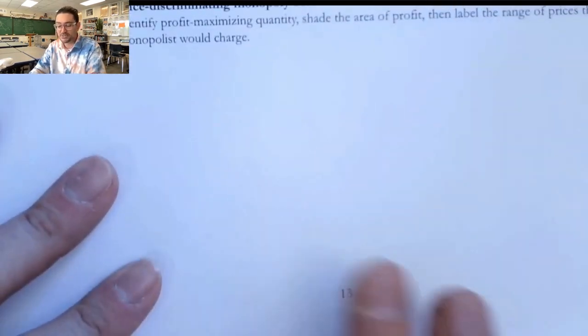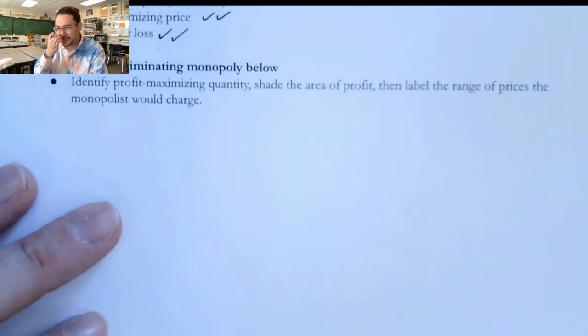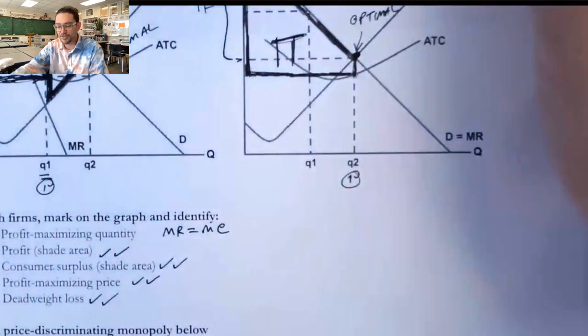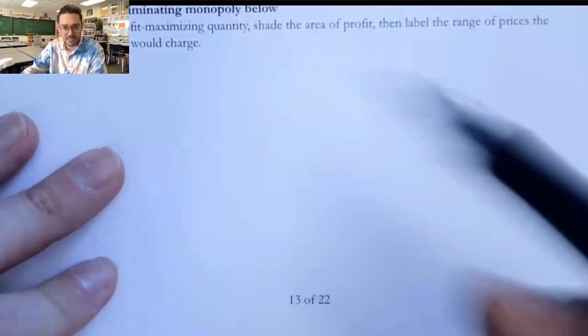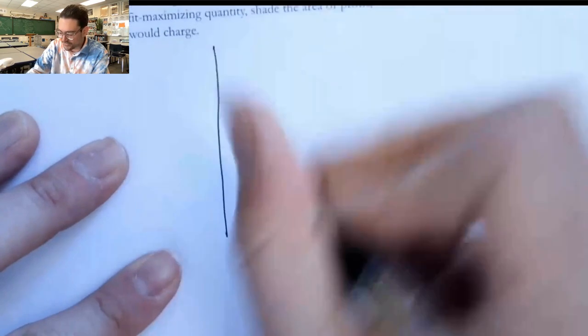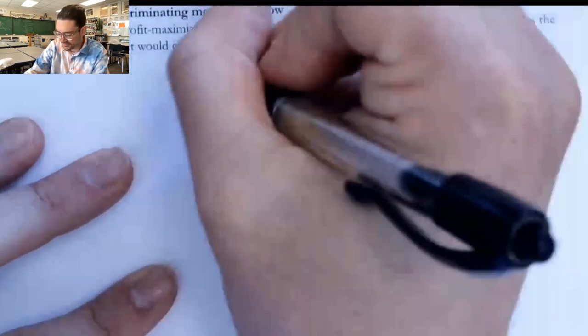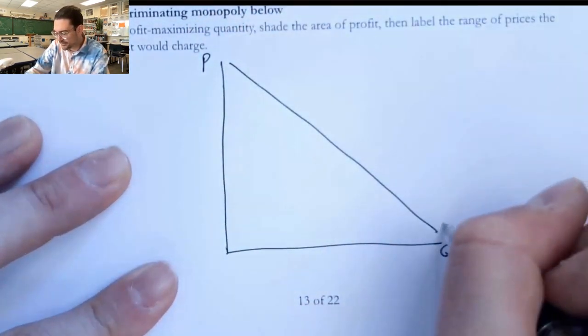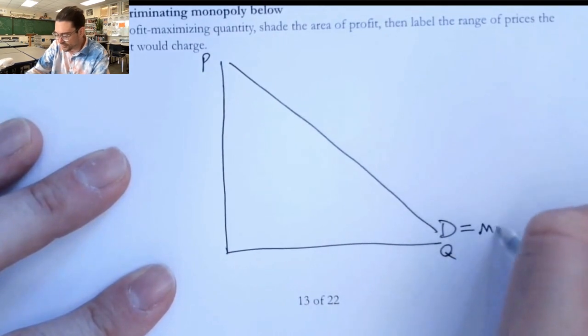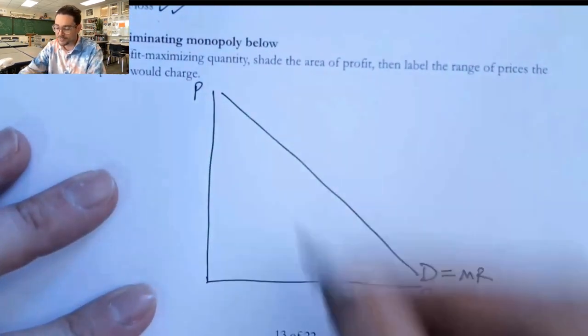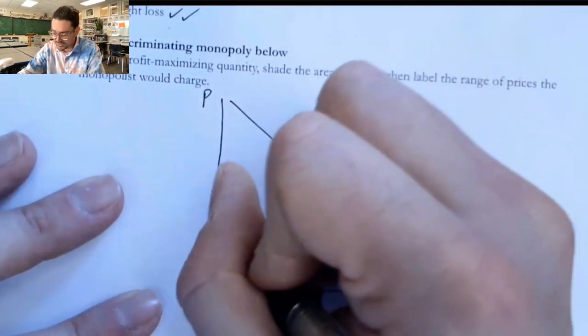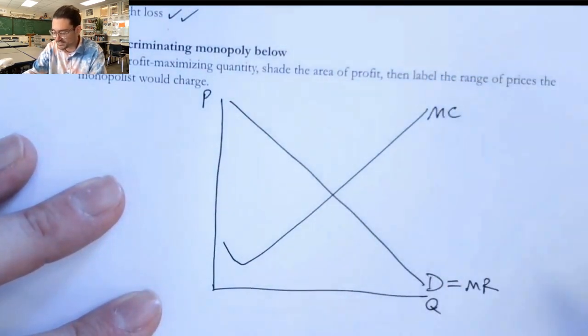Now, the last part is going to be drawing a price discriminating monopoly. And it's really just seeing can you replicate this picture from up here? Can you replicate it without assistance? So we're going to start with the axes, just like before. But now we have a demand curve that's actually equal to the marginal revenue curve. And so we don't have a separate one. We're just going to have a marginal cost curve that comes down and up.